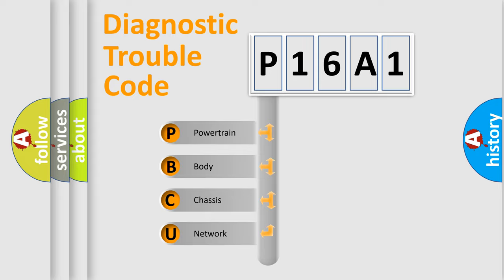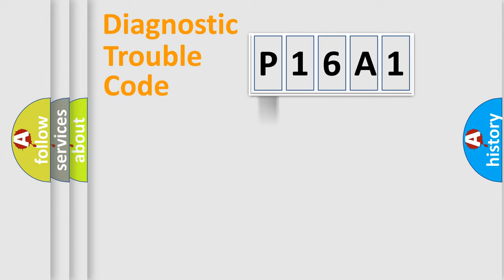We divide the electric system of an automobile into four basic units: powertrain, body, chassis, and network. This distribution is defined in the first character of the code.